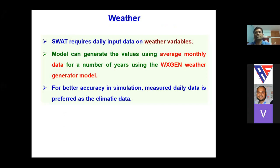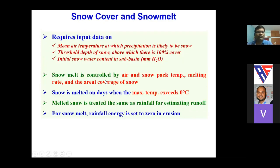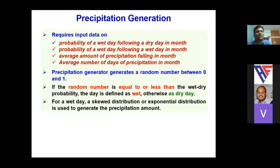SWAT requires daily input data for all weather variables — this is important to remember. If some parameters like temperature or precipitation are unavailable, there is a built-in weather generator that will generate them for you. However, for better accuracy it is always preferable to provide observed data. The weather generator generates precipitation based on a dry-day and wet-day approach.